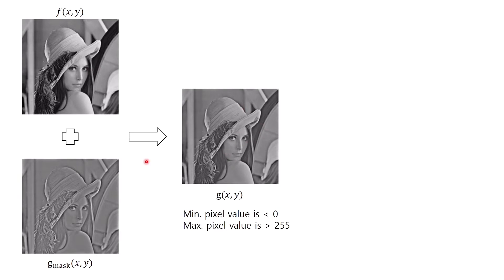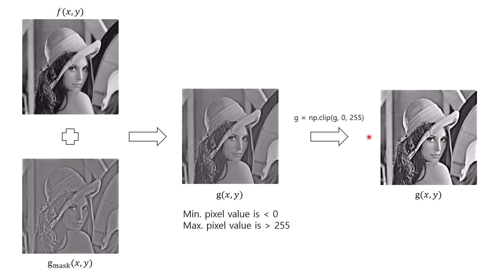Next I add the mask to the original image and I get the sharpened image. However, when we add these two images, some pixel values in the sharpened image will have values less than 0 as well as larger than 255, which is why the sharpened image looks gray. To deal with this problem we can use the numpy clip method, which limits pixel values so anything less than 0 becomes 0 and anything larger than 255 becomes 255.